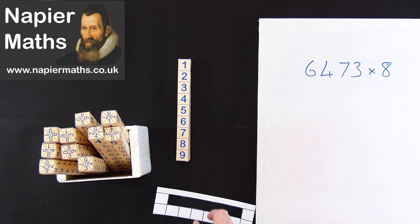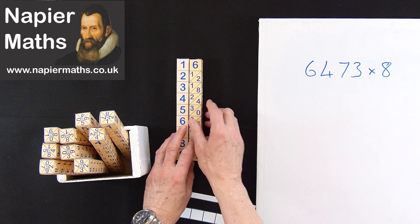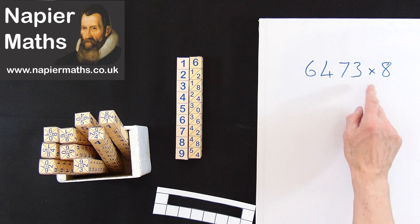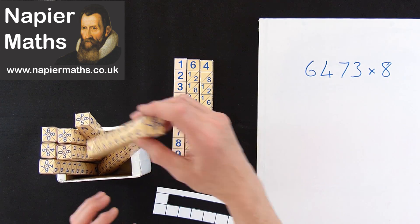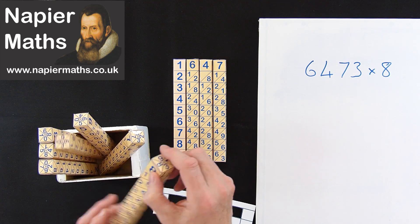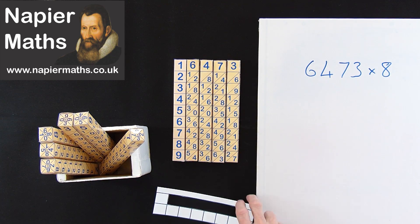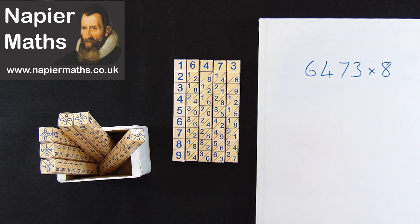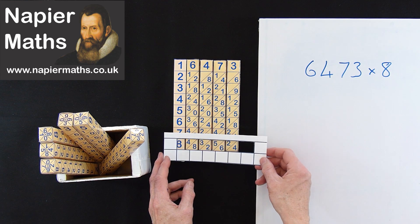Now we'll take the bones out, we need a 6 and then a 4, 7 and 3. And all we need to do now is take our answer grid and we're multiplying by 8, so we put it on at 8.